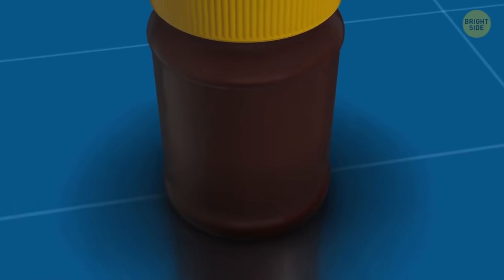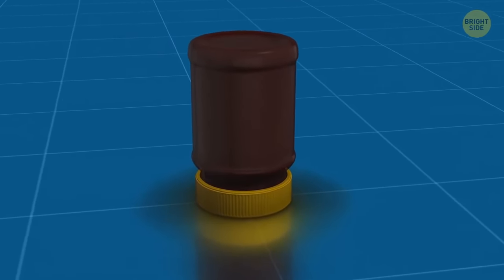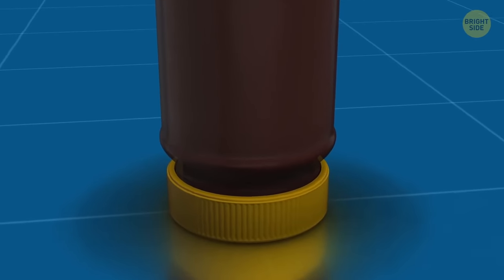To enjoy fresh and soft peanut butter, store it upside down. This way, the oils don't stay on the bottom all the time and distribute evenly in the jar.